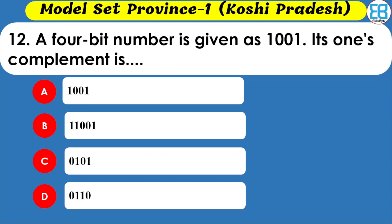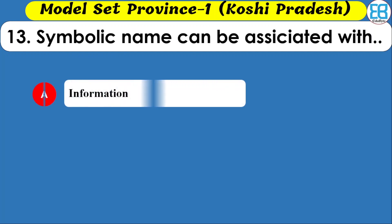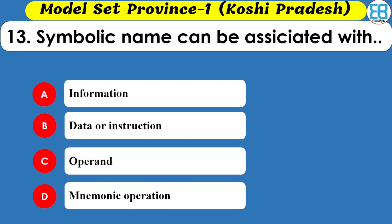For the complement question, the correct option is zero zero one one zero. A symbolic name can be associated with a location — this is called a mnemonic or operation code. The correct option is mnemonic.